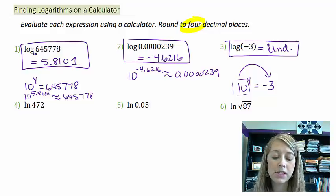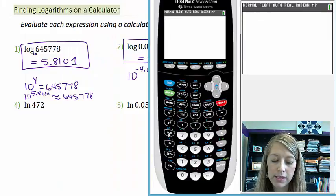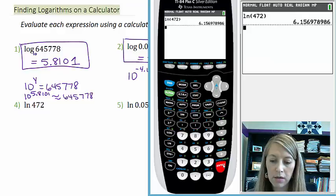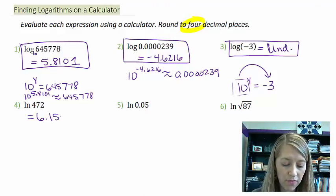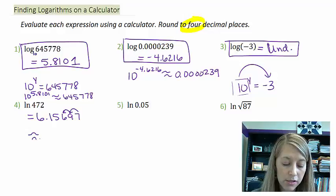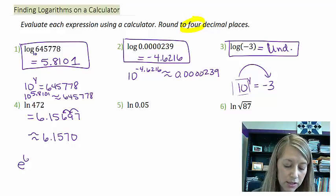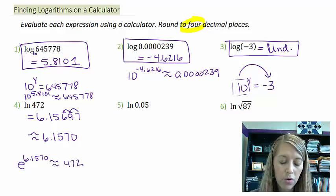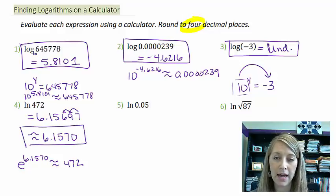For natural logs, the process is the same but using the LN button instead of LOG. LN of 472 equals approximately 6.15697. Rounded to four decimal places, that's 6.1570. This means e to the 6.1570 is approximately 472. Remember, e is approximately 2.718, so 2.718 to the 6.1570 power gives approximately 472.